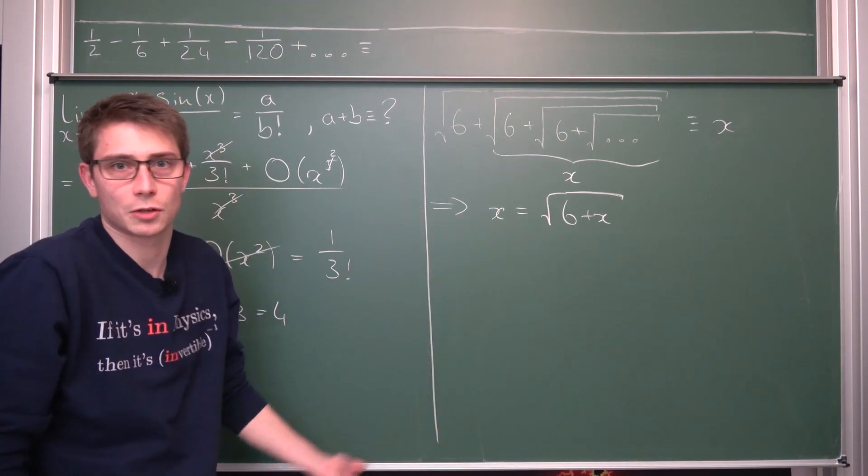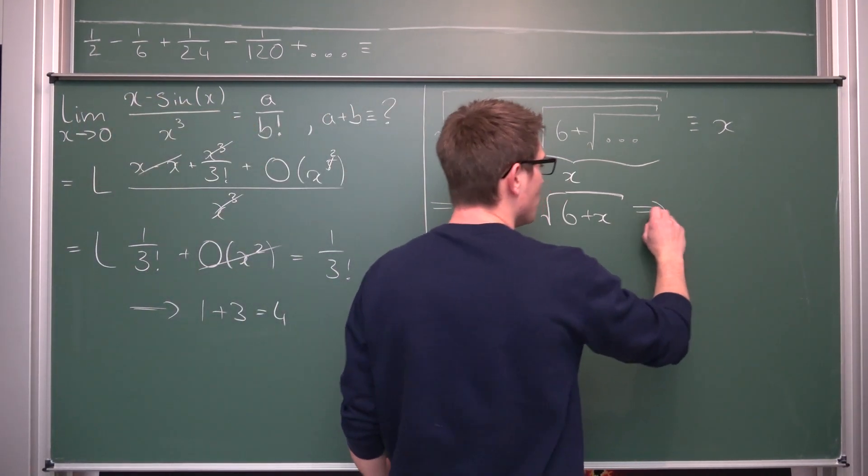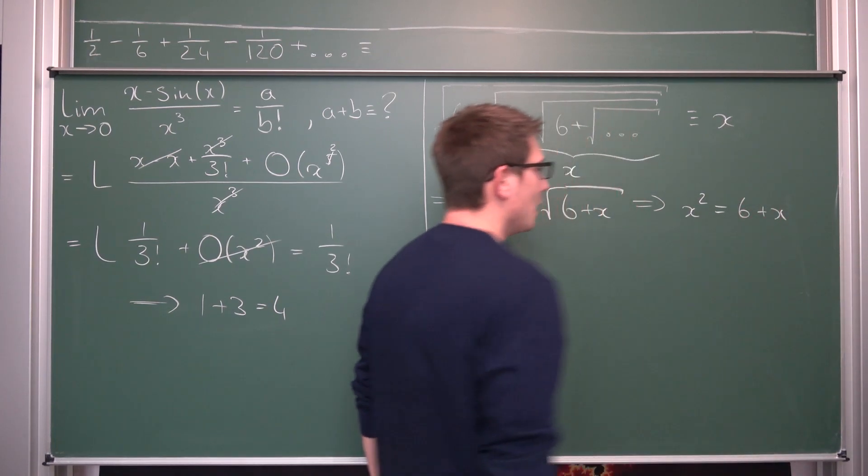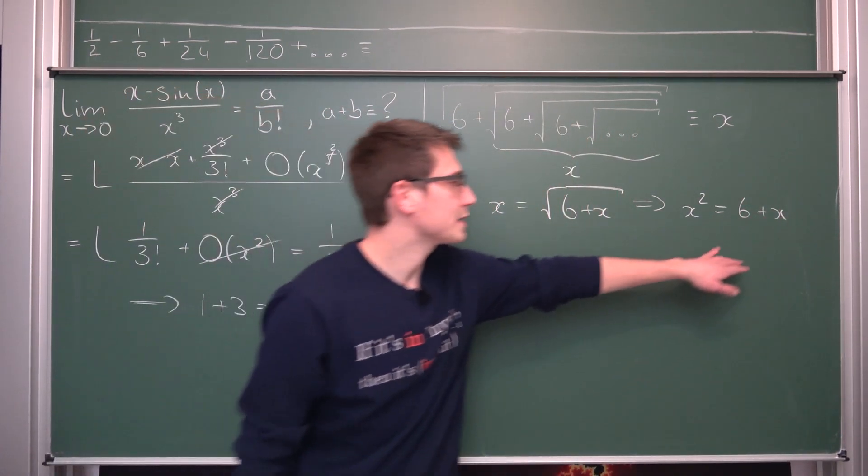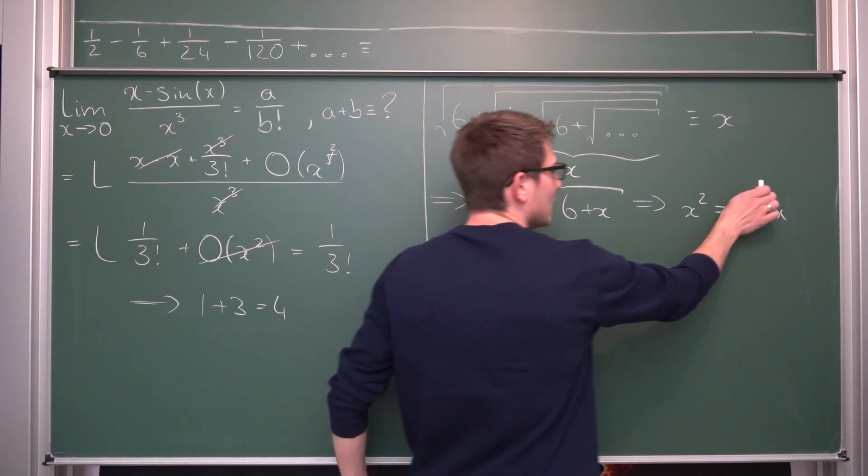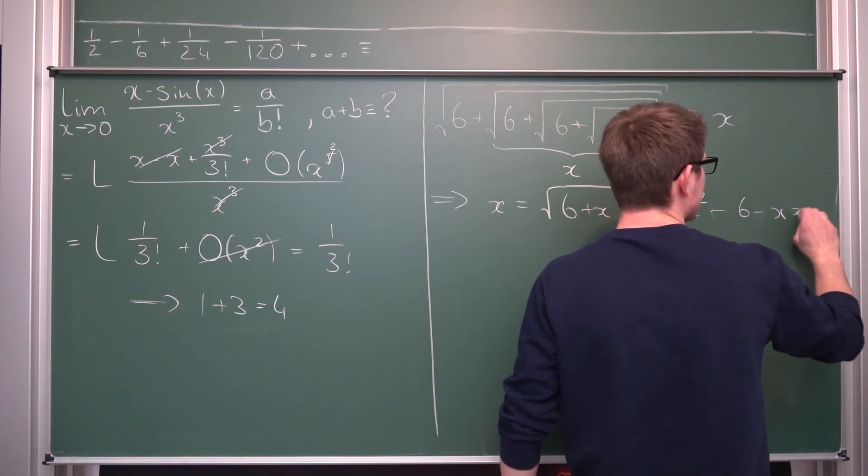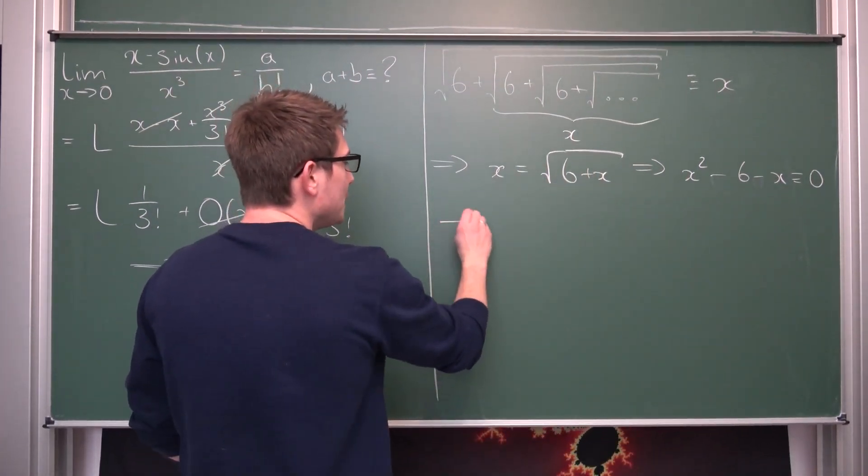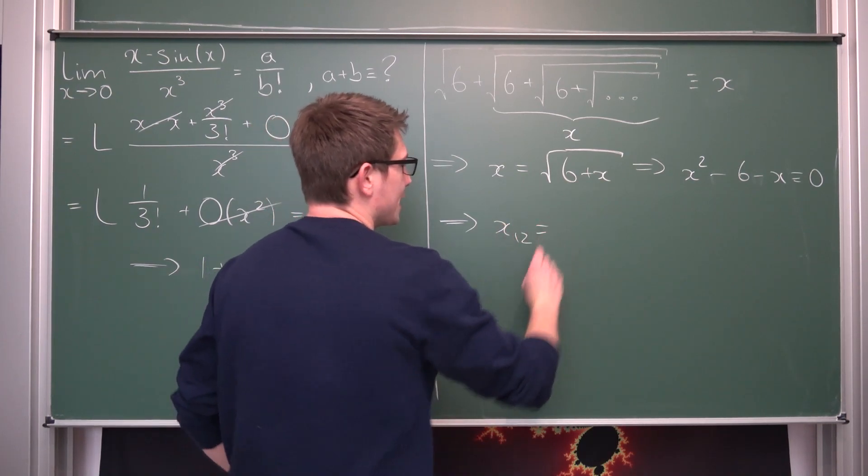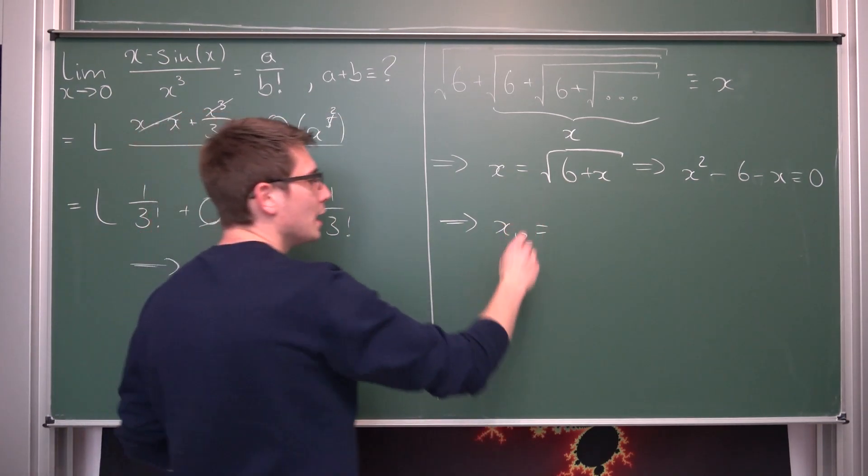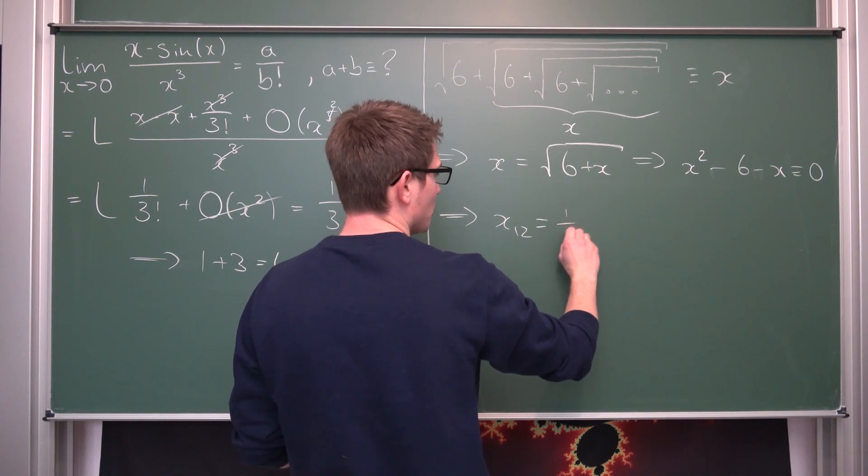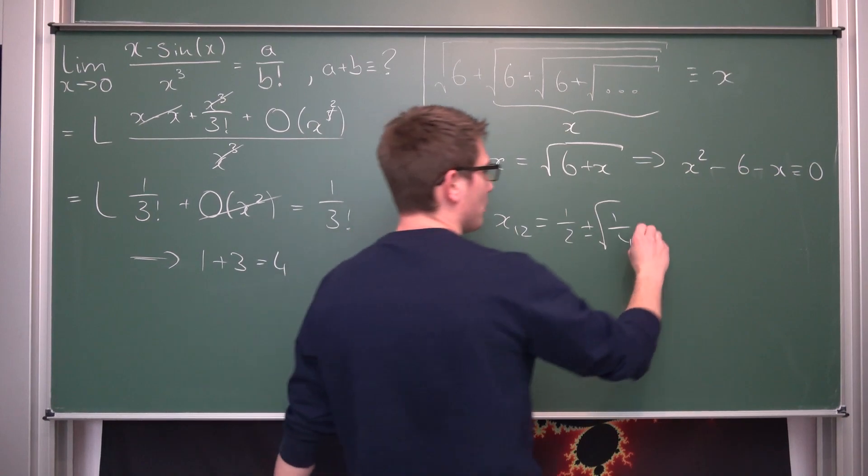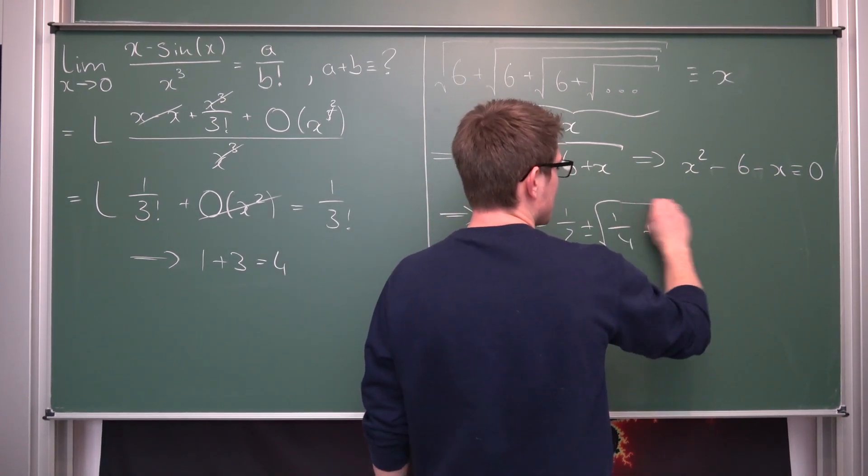Meaning our question is going to turn into x is hence equal to square root of 6 plus x. And this is just solving a quadratic. We are going to square both sides leaving us with x squared being hence nothing but 6 plus x. And now what we can do is we can subtract 6 and x on both sides, leaving us with x squared minus x minus 6 equals 0. And solving a quadratic is pretty easy. Meaning what we are going to end up with are two solutions for our x.